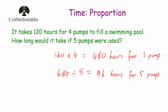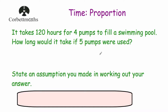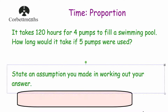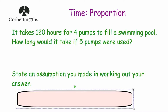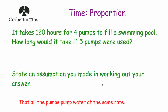That was part A. Let's have a look at part B. Part B asks for the assumption we used when working out our answer. One big assumption we were making was that each of the pumps works at the same rate. It could be that the 5th pump is a brand new pump and much more efficient than the other 4. So our assumption is that each pump pumps water at the same rate.